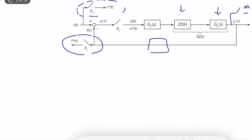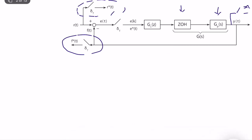For steady-state error, what we look at is whether e(k) goes to zero as time goes to infinity. This is the core point — we want e(k) to go to zero as k goes to infinity. If it's not zero, we want it to be as small as possible.